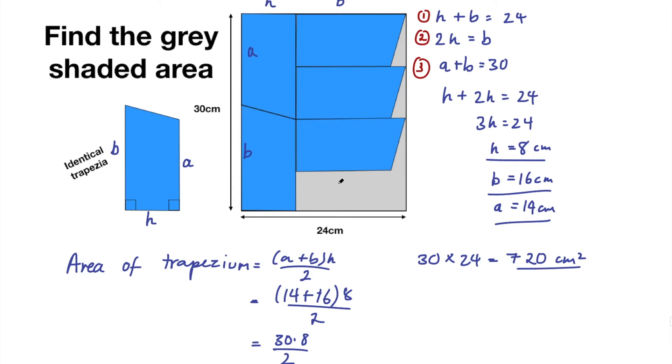And then to work out that gray area we do the entire rectangle subtract the area of the trapezia inside it. So 720 subtract 600 which is 120 centimeters squared. So final answer there 120 centimeters squared.